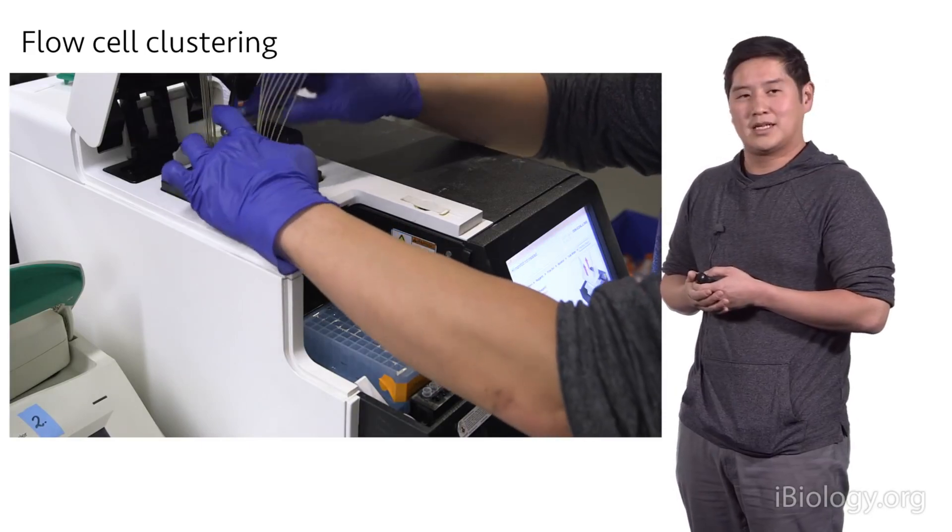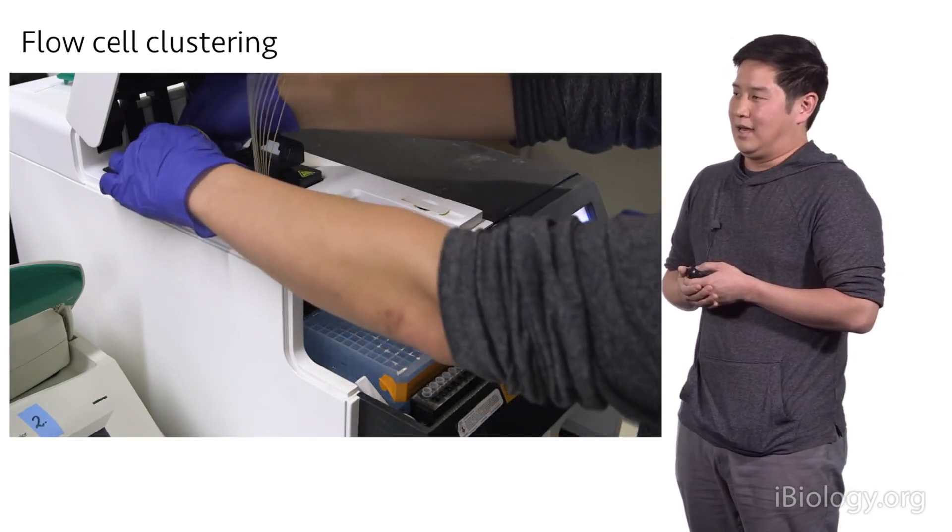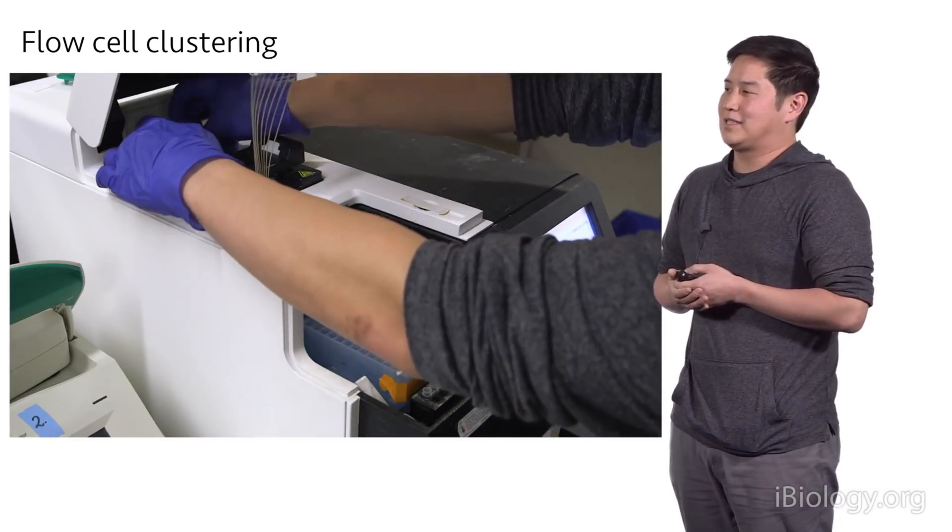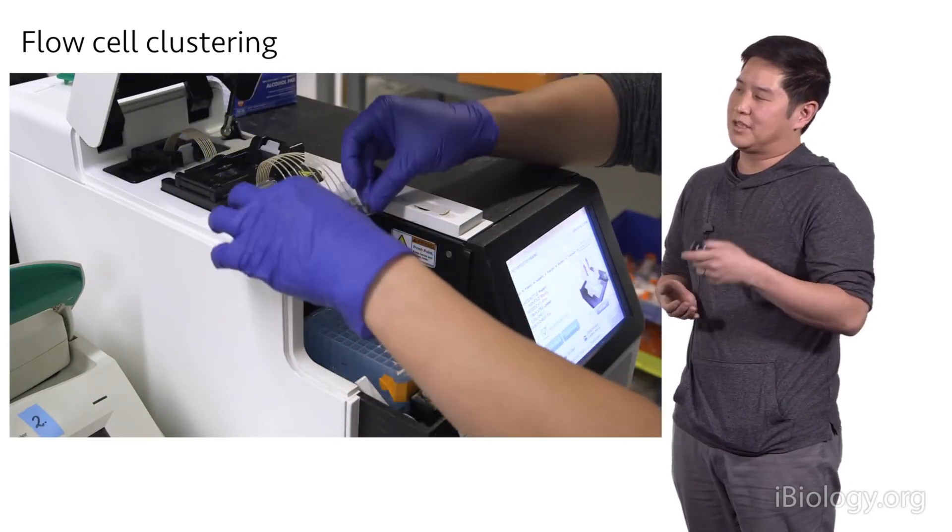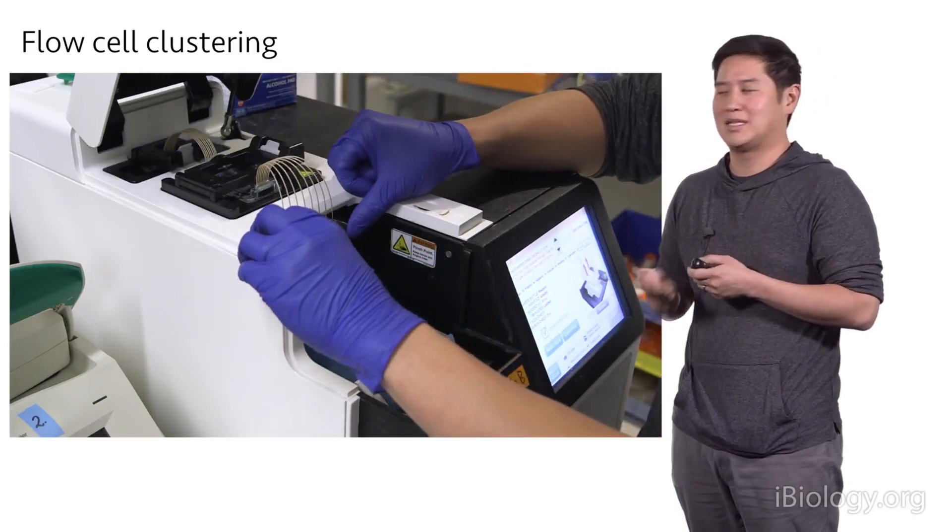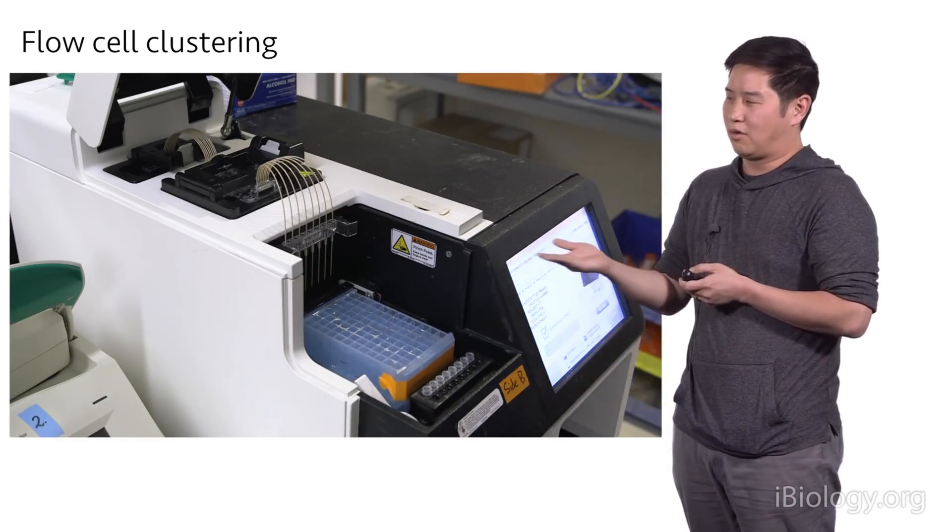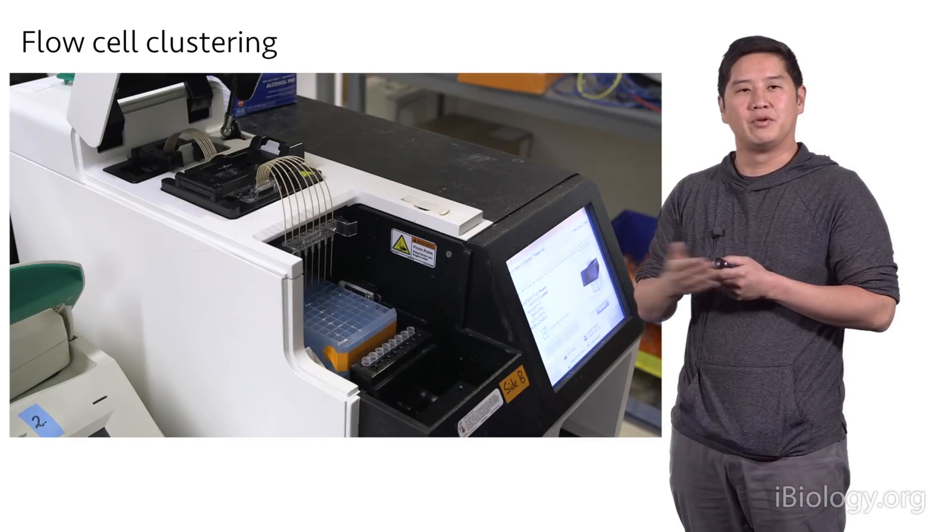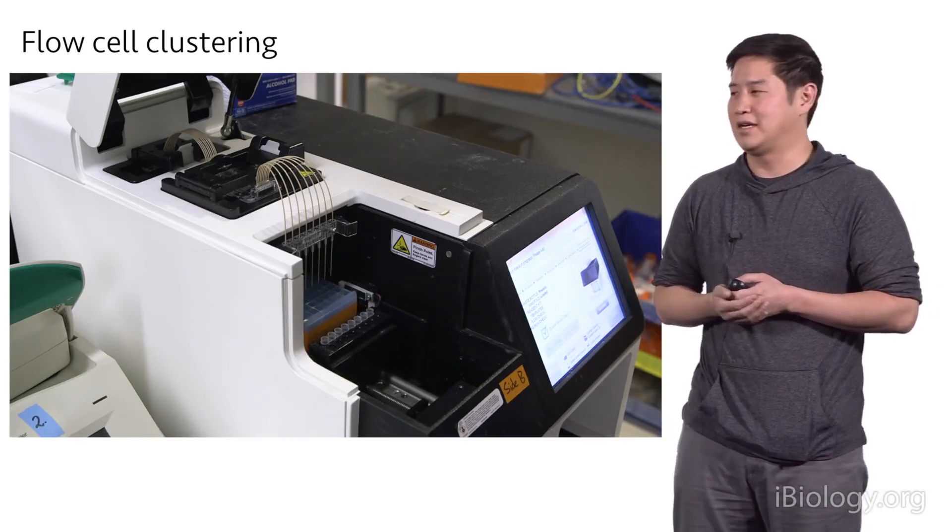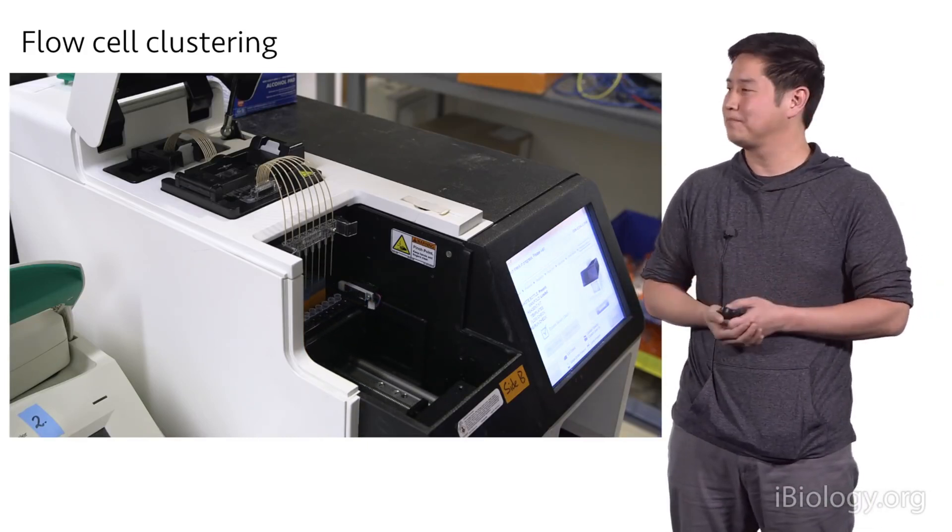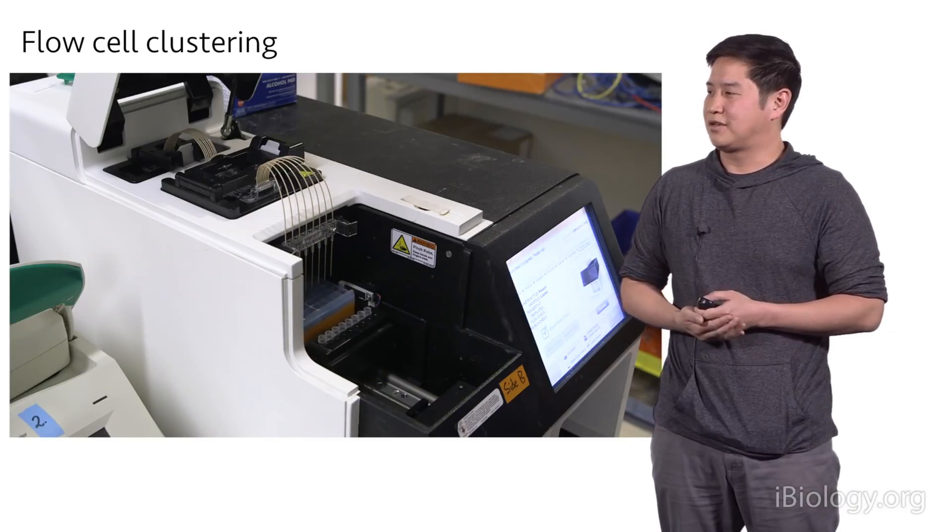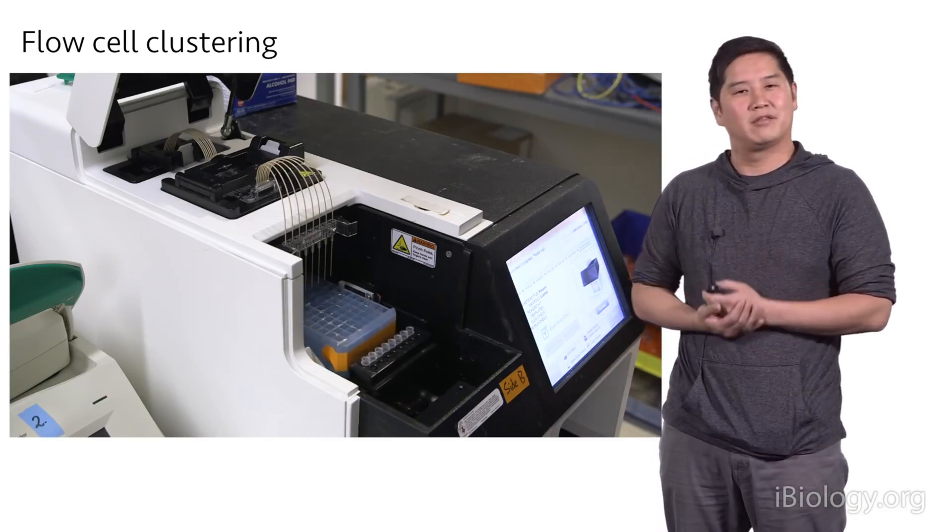Next, a manifold is mounted on top of the flow cell and connected to the C-BOT. And in the back of the C-BOT, or this clustering instrument, are a series of pumps that will now pull reagents from the blue reagent plate, or from our sample strip tube, and pass them through the flow cell. And this is how reagents and liquids are delivered. At this point, the clustering procedure takes about three to four hours.